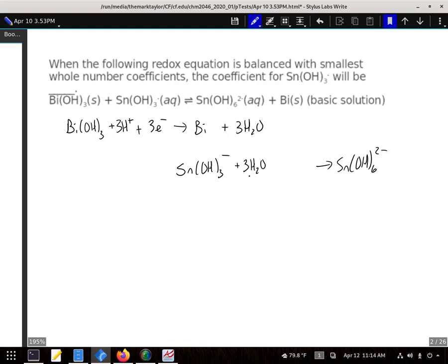That gives us six plus those other three hydrogens, nine hydrogens. On this side we already have six, so I need to add three H+ over here. That got all of our atoms balanced.